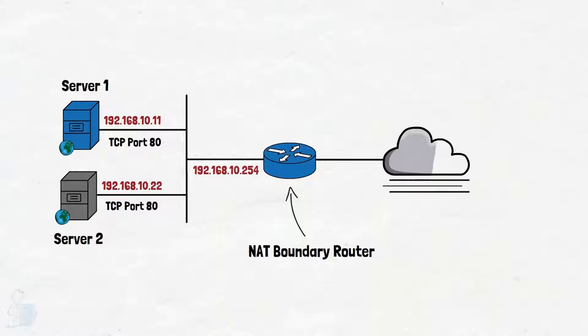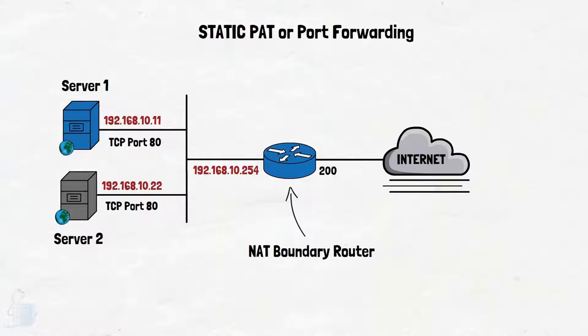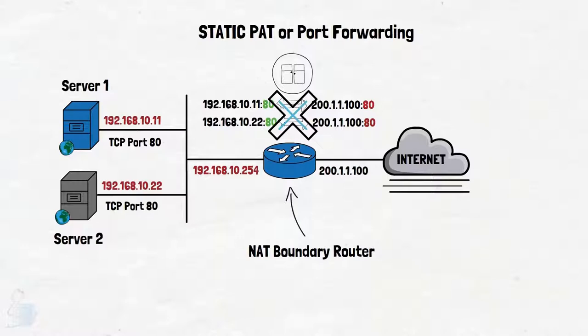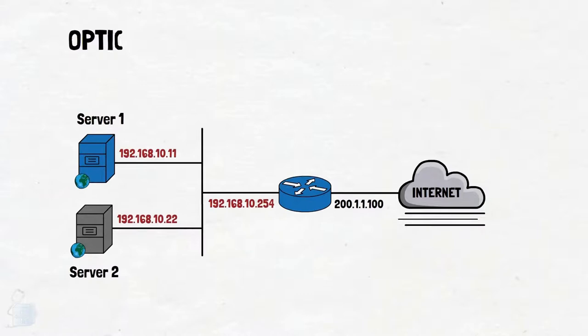But if you need those two servers to be accessible over the internet via static PAT or port forwarding on a single public IP address, which is a common case, then things get interesting. The NAT device, which in our case is a router, cannot understand two NAT entries with the same public IP address and the same external port numbers mapped to two different internal servers, because there is no differentiating criteria between them on the external side.